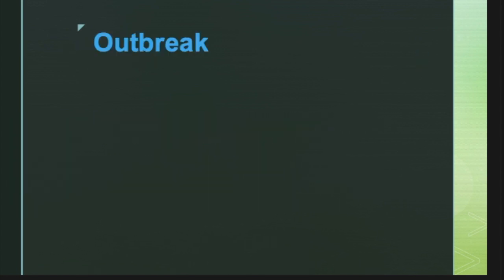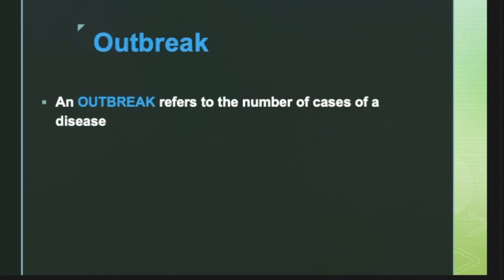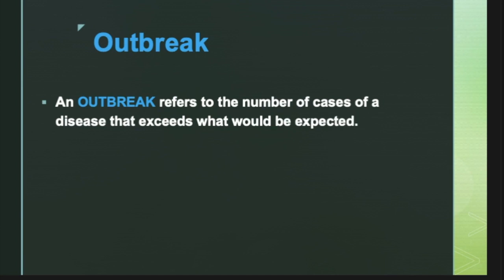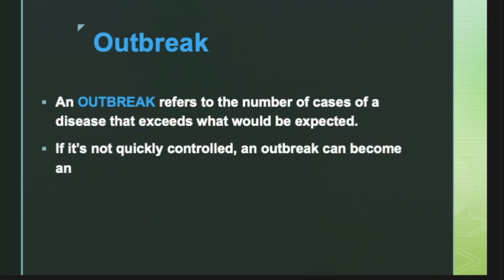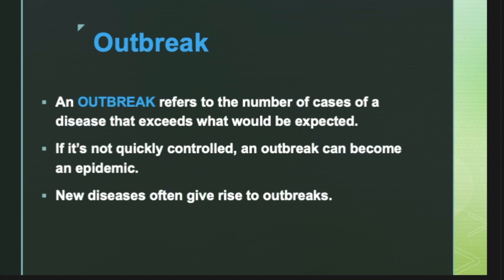Now let us look at what is an outbreak. An outbreak refers to the number of cases of a disease that exceeds what would be expected. For example, a case wherein 10-20 kids in a class come down with the stomach flu is an outbreak, and if it is not quickly controlled, an outbreak can become an epidemic. Also, new diseases give rise to outbreaks as it is immediately noticeable since the symptoms are new.